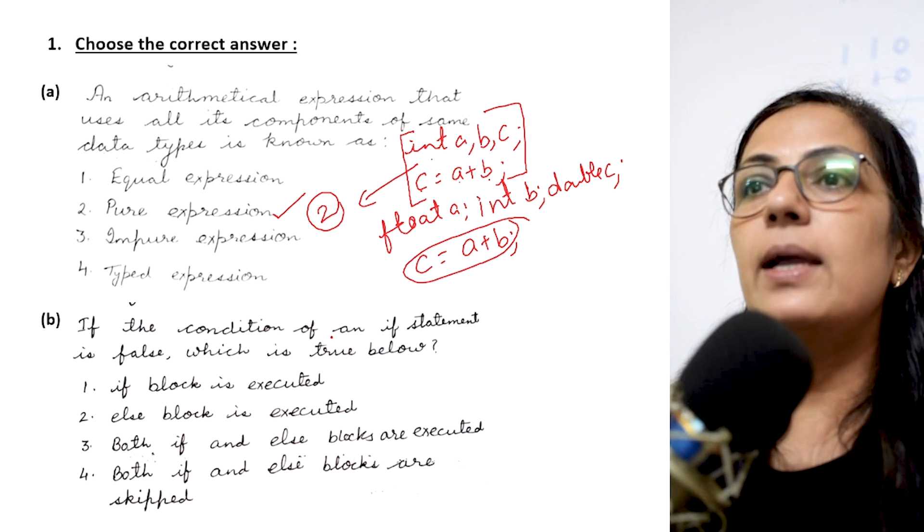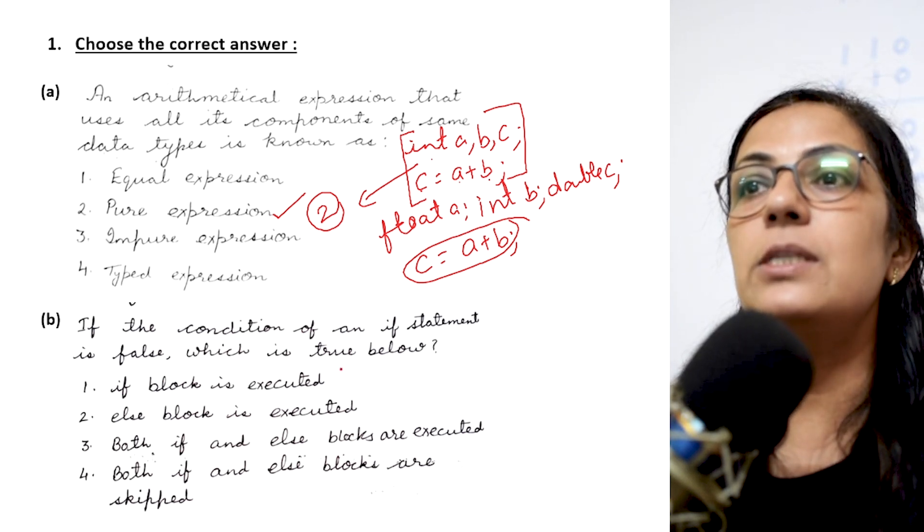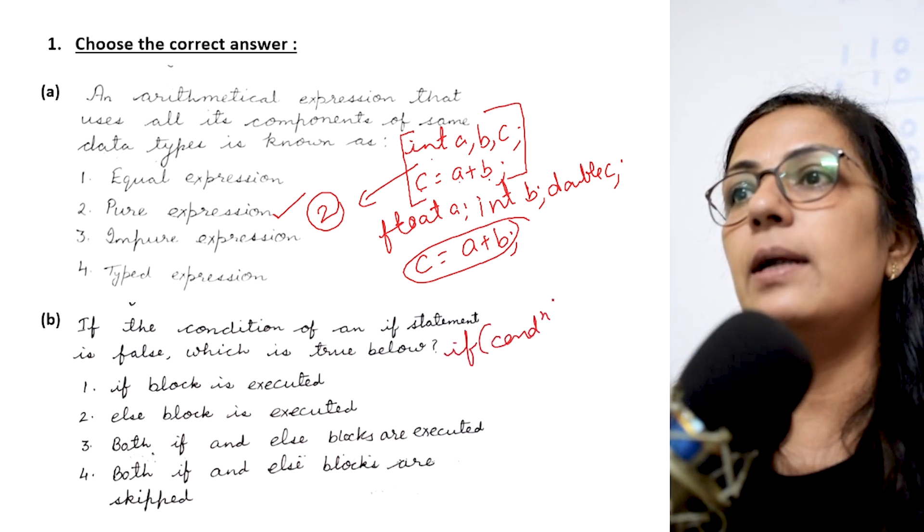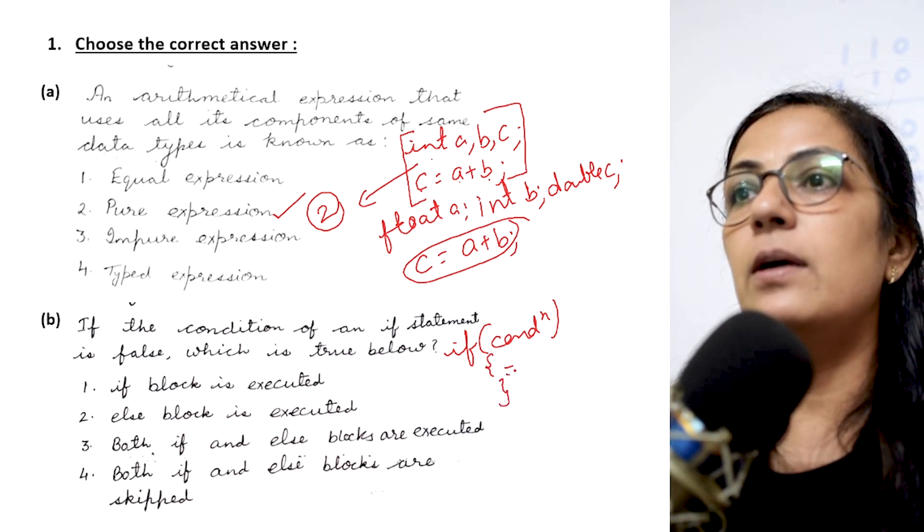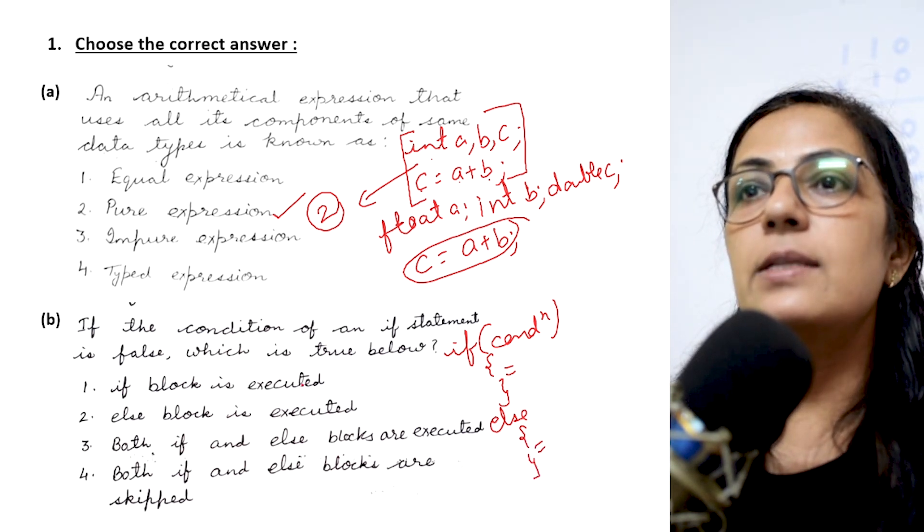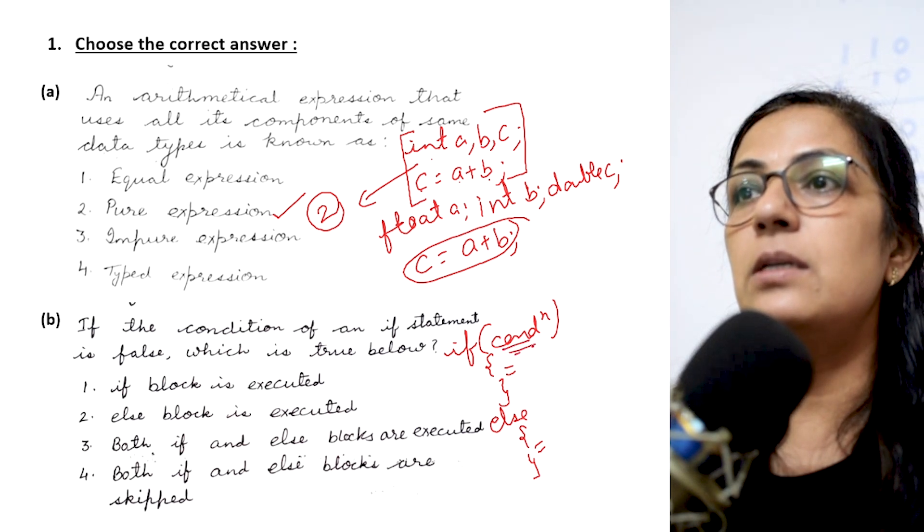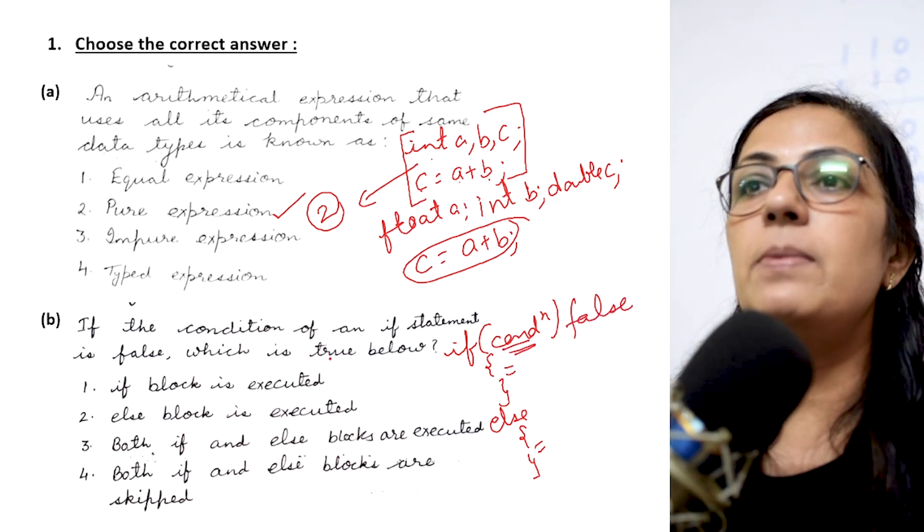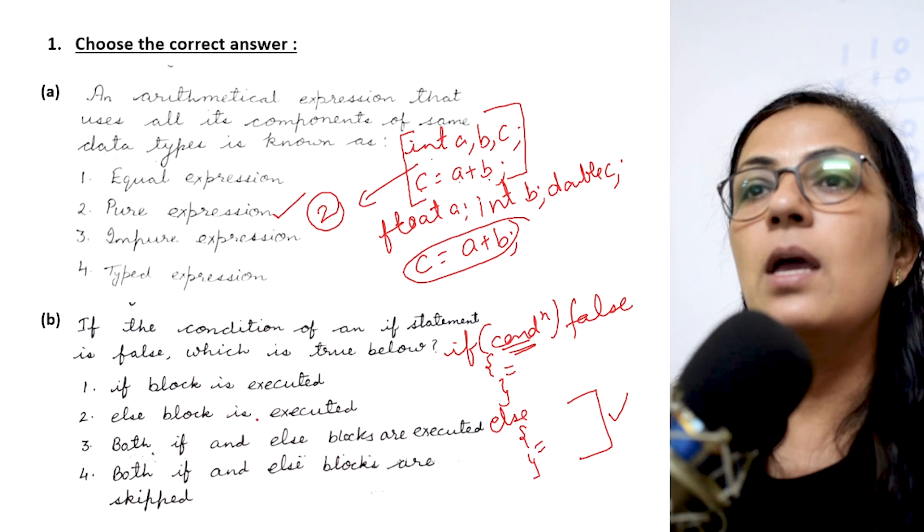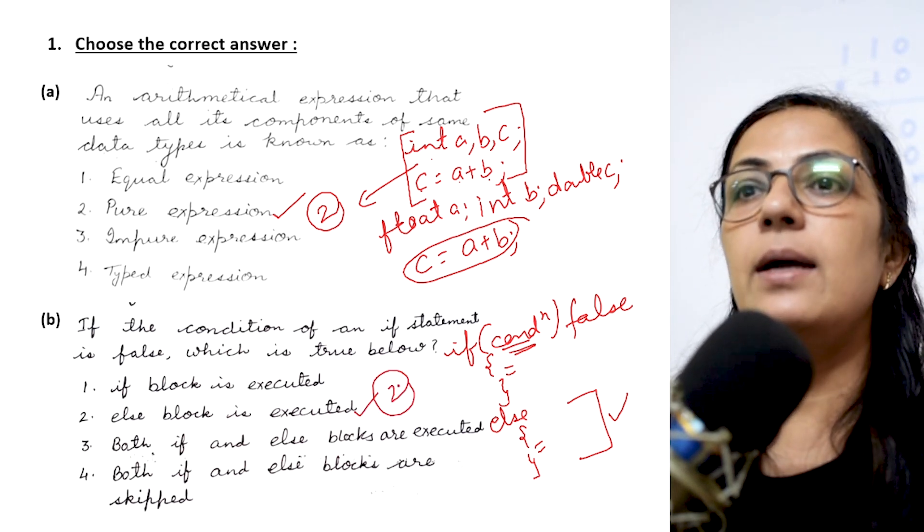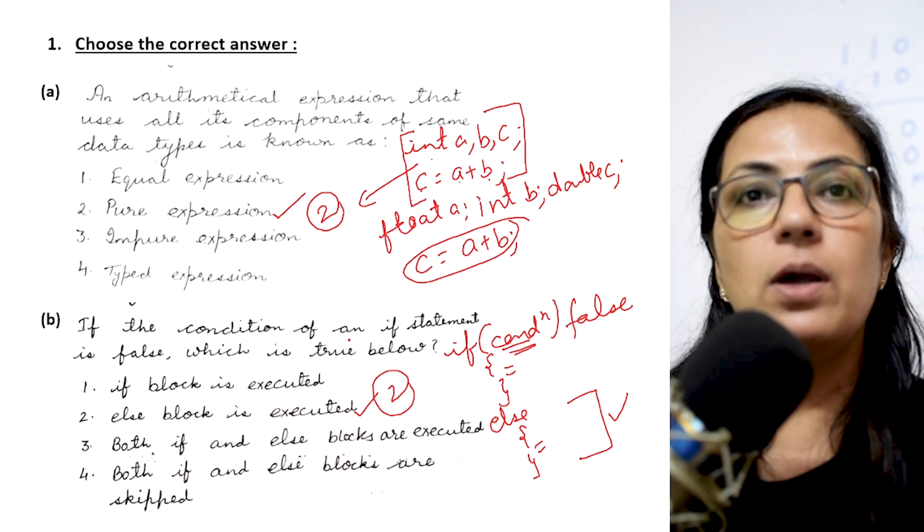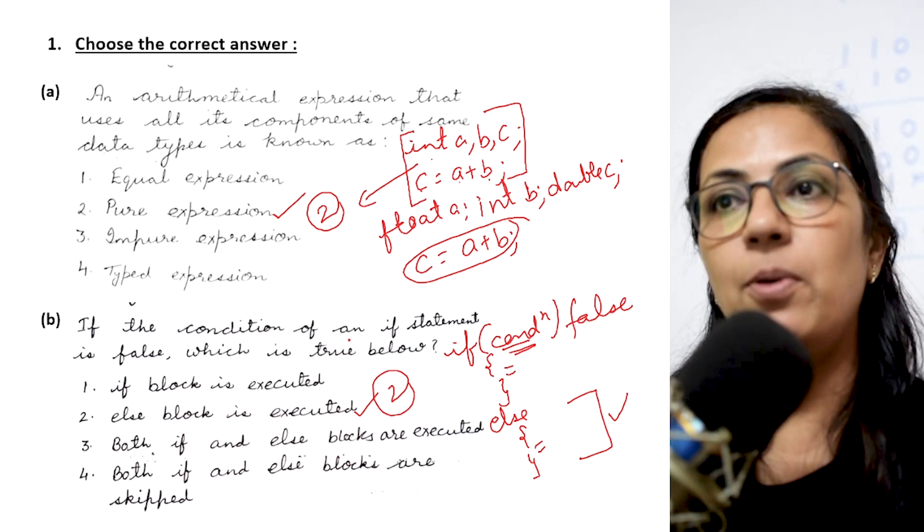The next question is if the condition of an if statement is false, which is true below? You write if, then the condition, then the block, then else block. If this statement is found to be false, then which statement will be true? Else block will be executed. So option 2 is correct. If the statement condition is found to be false then else block is always executed. If it is true the if block is executed.